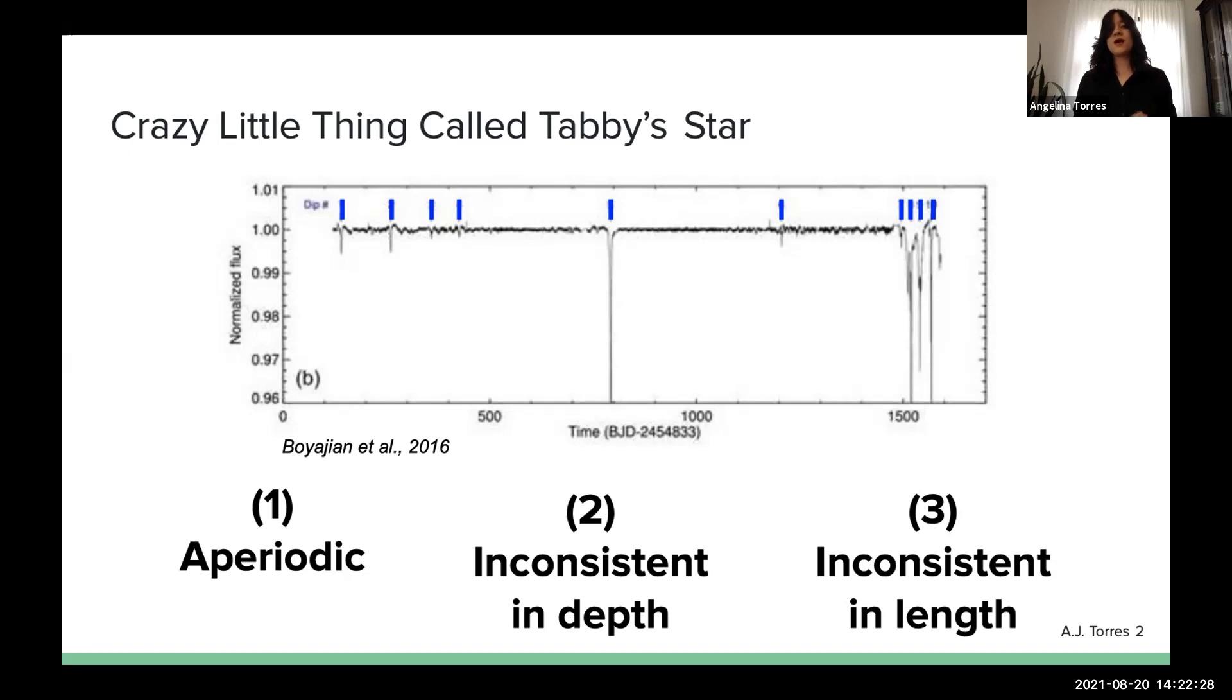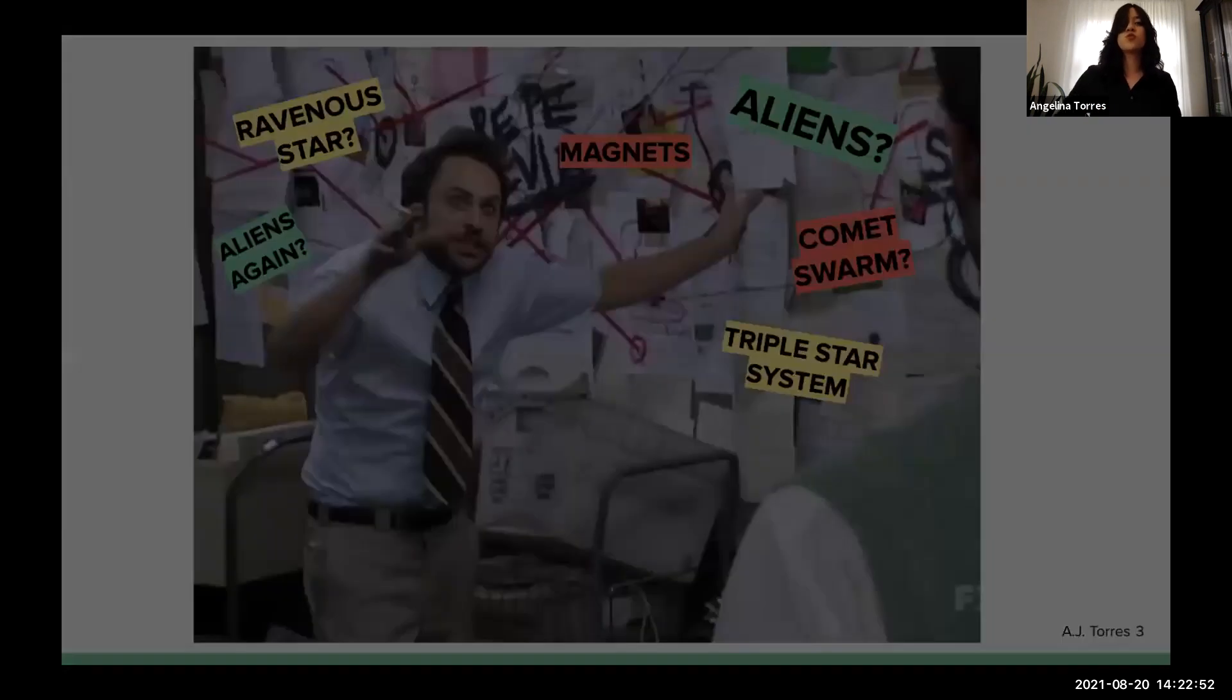However, by all means, Tabby's star is a completely regular F3V main sequence star. There are no signs of anything like youth or infrared excess that might explain this behavior. In short, of 150,000 stars that were discovered by the Kepler telescope, this is the only one whose behavior could not be explained in terms of stellar astrophysics. So naturally, the scientific community goes wild.